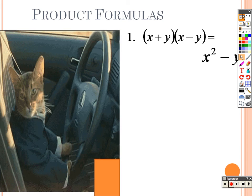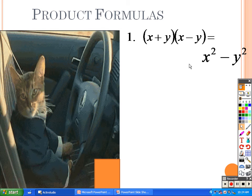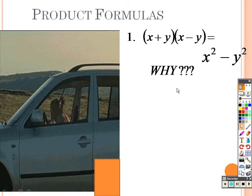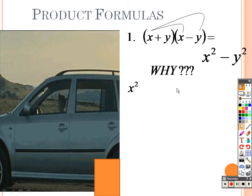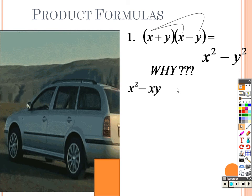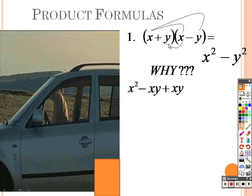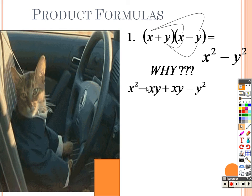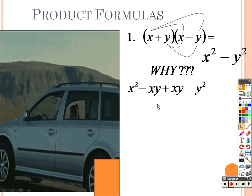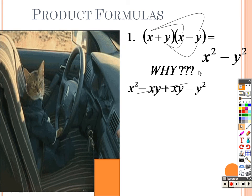So just to show you here how this all works out. x times x is x squared. x times negative y is negative xy. x times y is positive xy, so they cross out. And y times negative y is negative y squared. This is just the foiling. x times x is x squared, x times negative y is negative xy, then x times y is positive xy, y times negative y is negative y squared. Notice these two items are exactly the same except one is positive and one is negative, so they cross right out, leaving you with just x squared minus y squared.